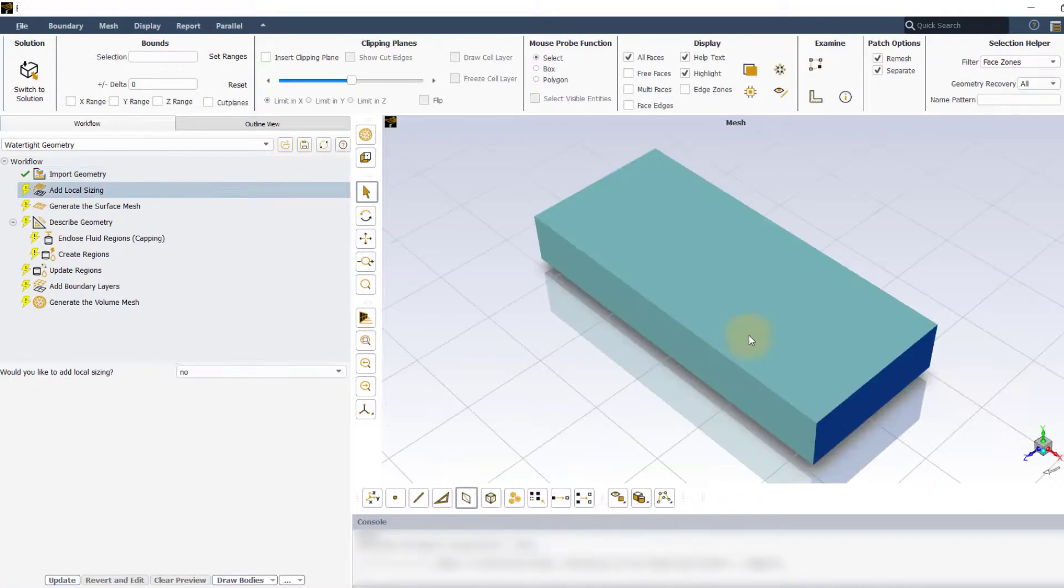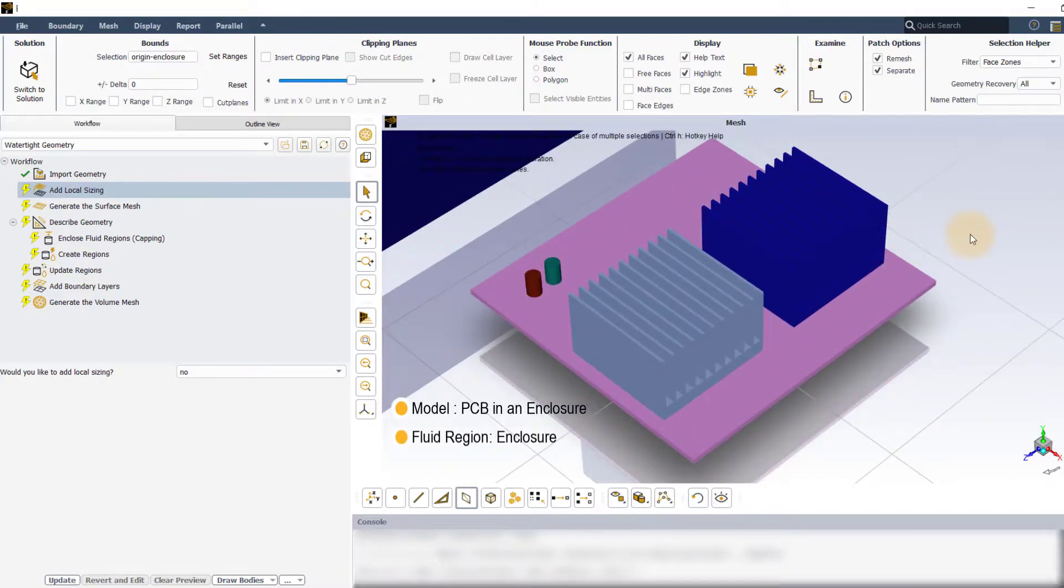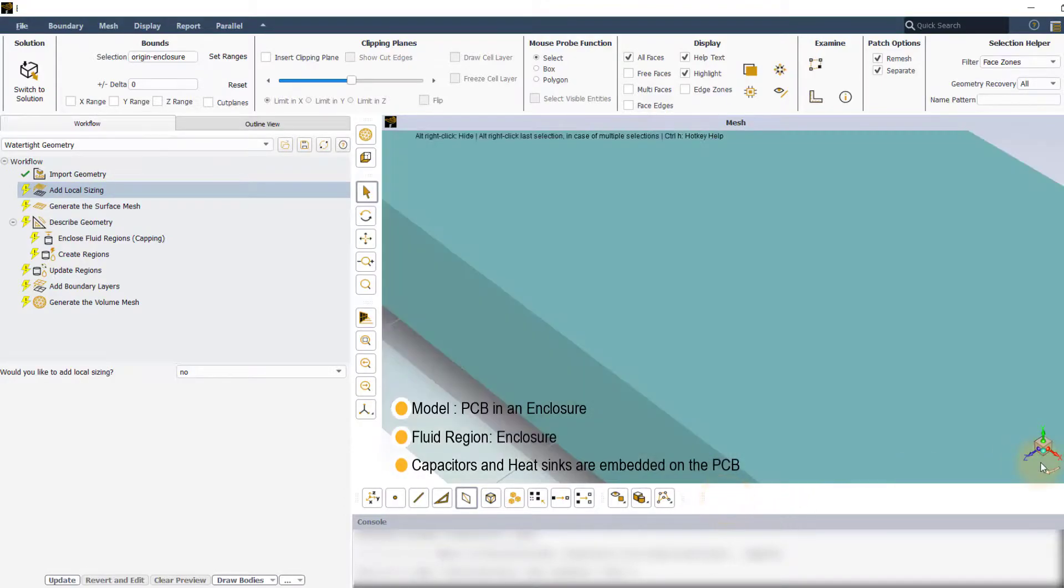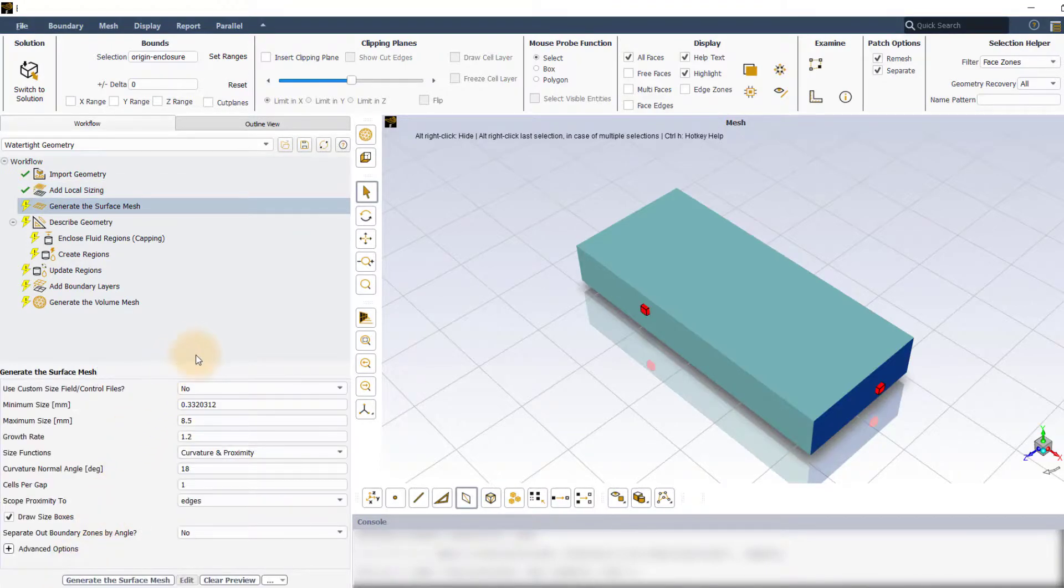The model we have here is that of a printed circuit board placed inside an enclosure which acts as the fluid region. Two cylindrical capacitors as well as heat sinks are embedded on the PCB. We will not be adding any local sizing in this demo, so execute the task and continue to the next task, that is generate the surface mesh.